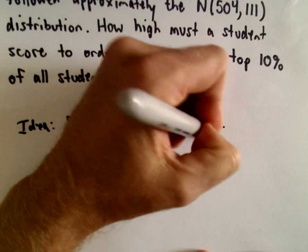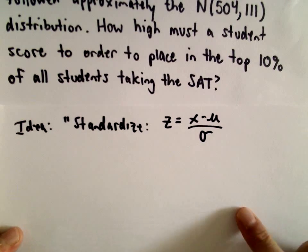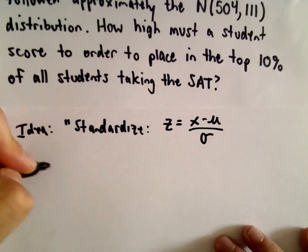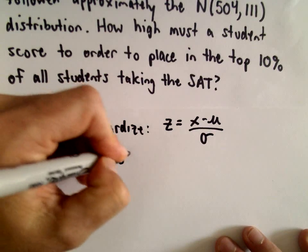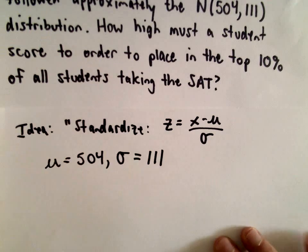z equals x minus mu over sigma. We have those values: mu is equal to 504 and our sigma value is equal to 111.